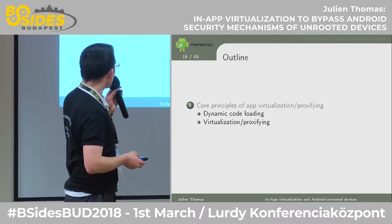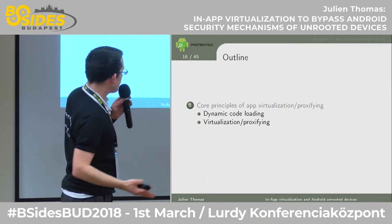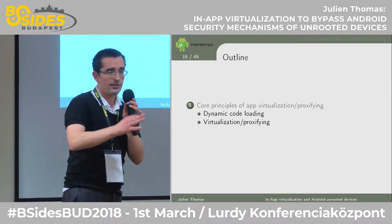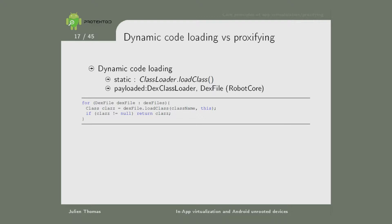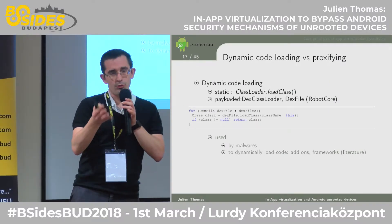Here comes the second aspect: in-app virtualization or proxifying. With dynamic code loading, we can put a separate DEX file into our application and load it into memory after launch. You can dynamically load Java methods and execution. It's used sometimes by malware but also to dynamically load legitimate code. You can use it to patch an existing application without following Android's update mechanism, or to launch user-specific frameworks. Not all dynamic code loading has bad intent — that's the problem, you can't just block it because many genuine applications use it.